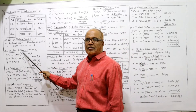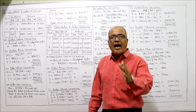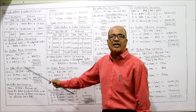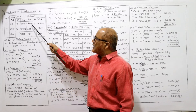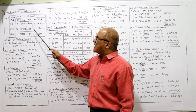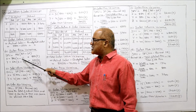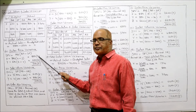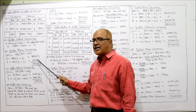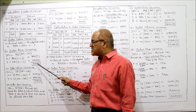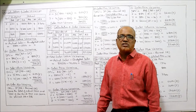Now sales price variance. The formula is: actual quantity into (actual price minus standard price). Actual quantities are 800 and 600. Actual prices are 4 and 3; standard prices are 3 and 4. For X: 4 minus 3 into 800 equals 800 favorable. For Y: 3 minus 4 into 600 equals 600 adverse. So 800 favorable minus 600 adverse gives 200 favorable as the sales price variance.